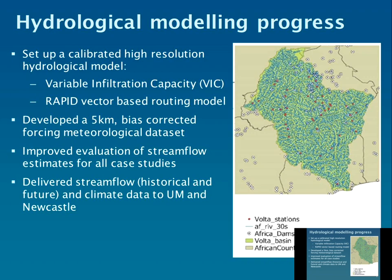We use two models: a hydrological model called the VIC model, which stands for the Variable Infiltration Capacity model. This runs on a grid basis at five kilometres across the basins and predicts runoff. That runoff is then routed down a streamflow network using another model called RAPID. We've set these up at high resolution across the three case studies — you can see on the right the Volta and the detail in the river network simulating streamflow.